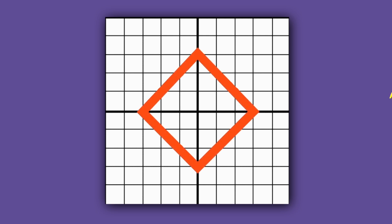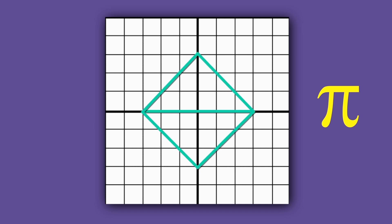Now, let's compute pi, the ratio of the circumference to the diameter. To figure out the circumference, we need to figure out how long each of the four sides is in this diamond-looking shape. Let's measure the length of this side.